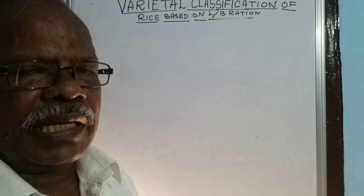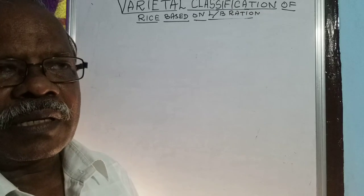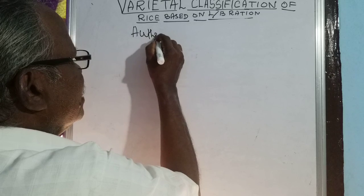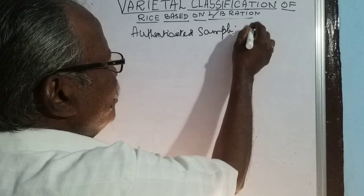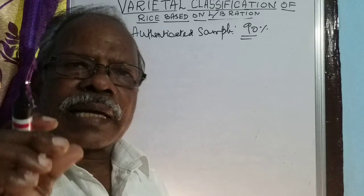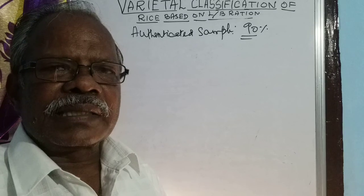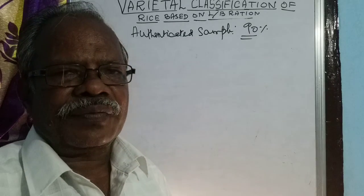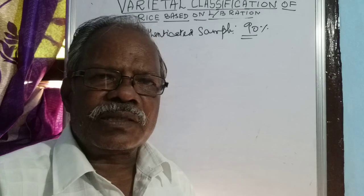Now we are going to see how the actual classification is made. First, we will see what is meant by authenticated sample. An authenticated sample means a sample which has 90% purity, collected from a rice research center. The variety is fixed by the Government of India even before releasing the variety — that is called a notified variety.